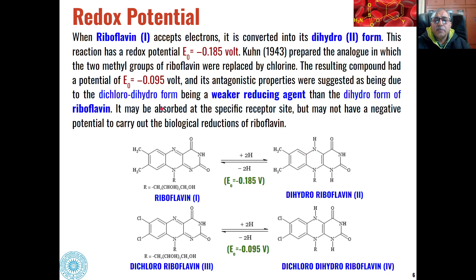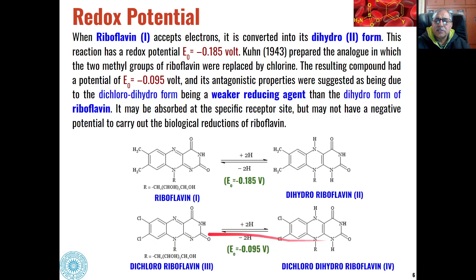Dichlororiboflavin may be absorbed at a specific receptor site but may not have the active potential to carry out the biological reduction of riboflavin. Although it has a similar structure, it cannot serve the purpose of riboflavin.